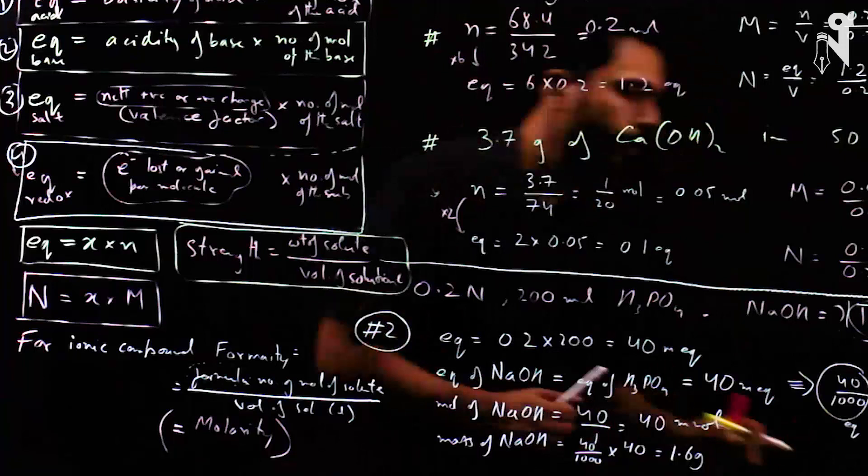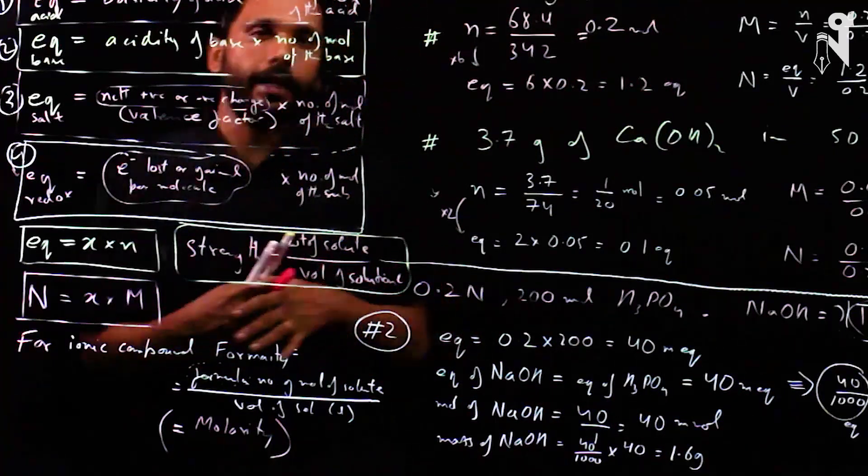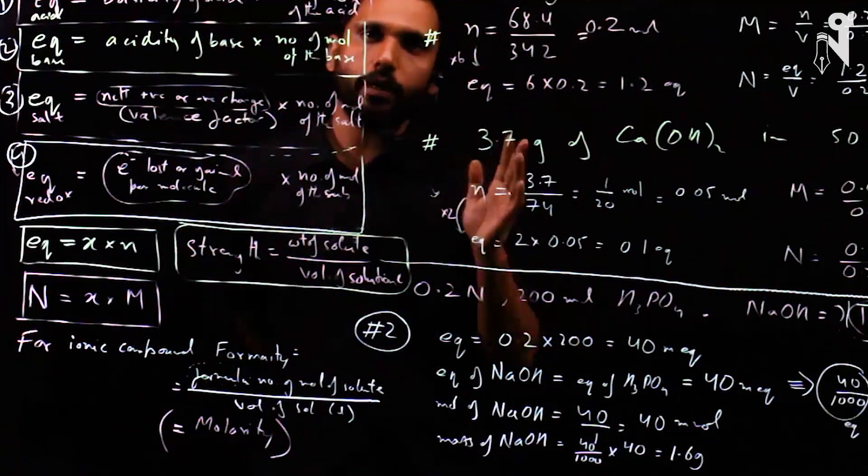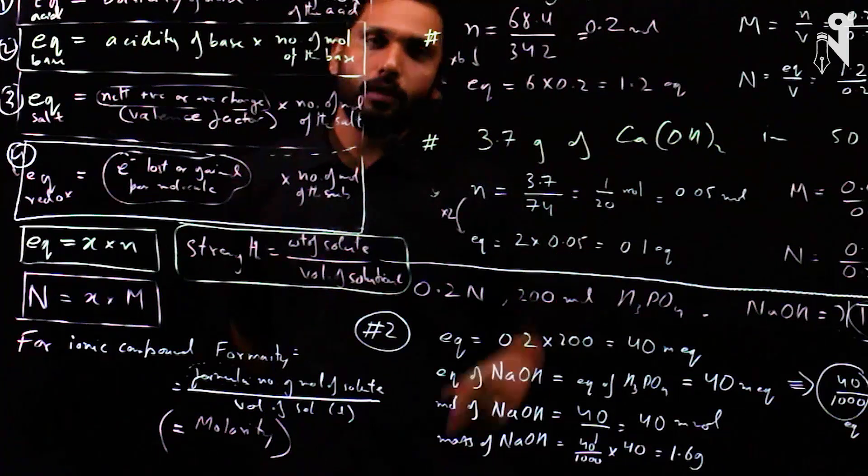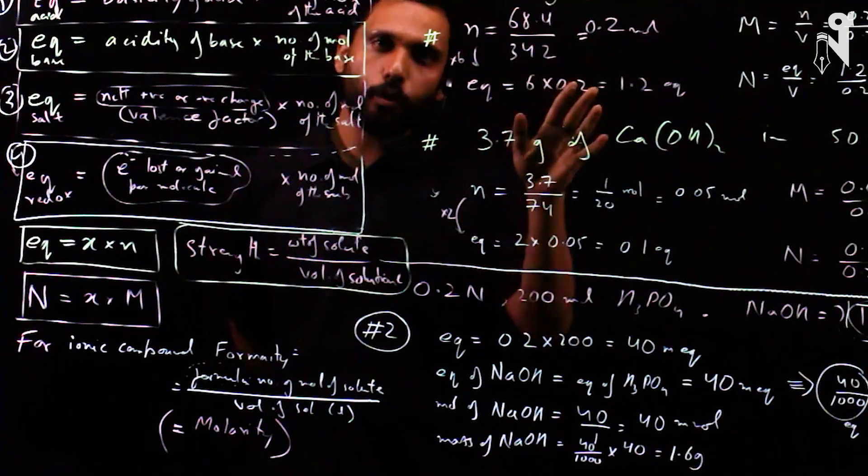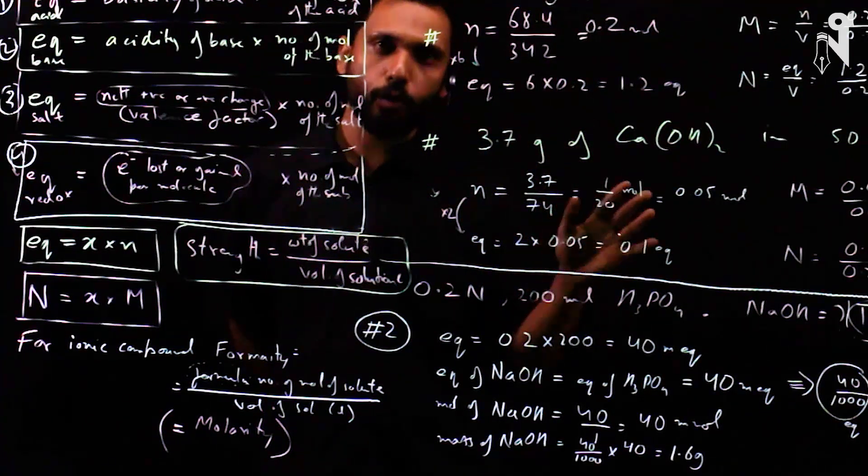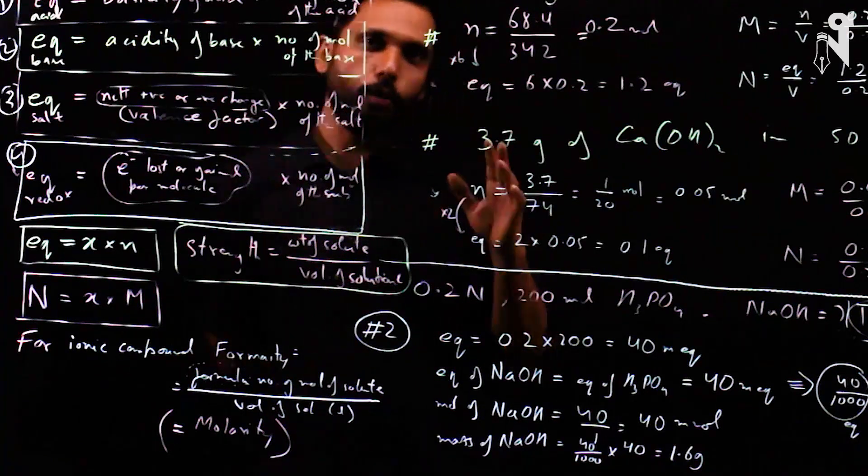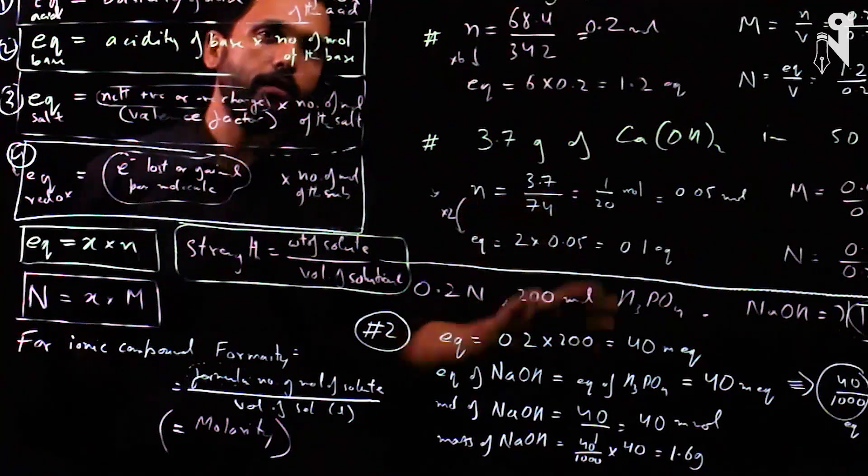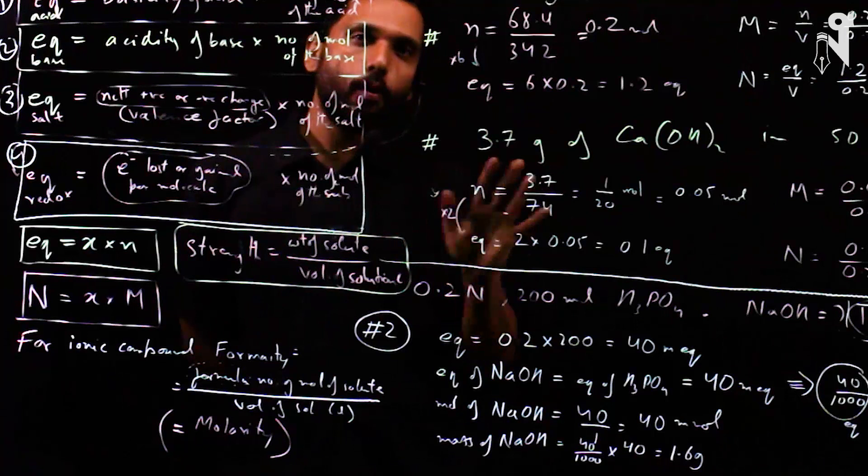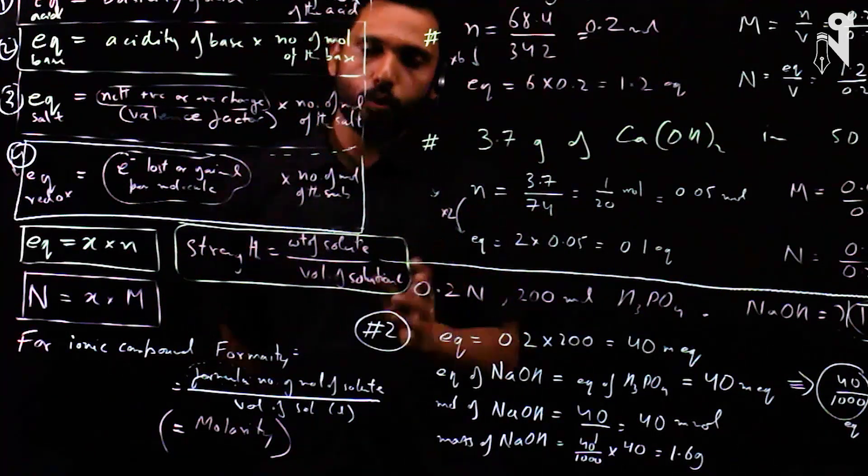So that's your strength. If I tell you that 8 grams of NaOH was dissolved in 1 liter of water, what is the molarity? You have to convert 8 grams into number of moles, which is 0.2 moles - 8 divided by 40. 0.2 moles in 1 liter, so the molarity was 0.2.